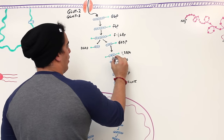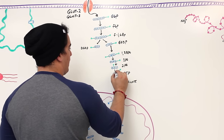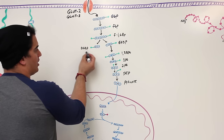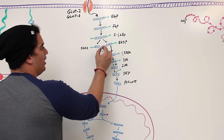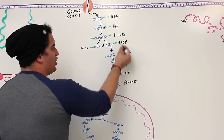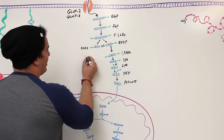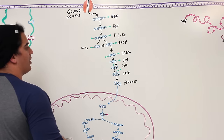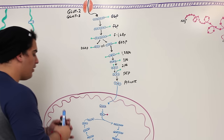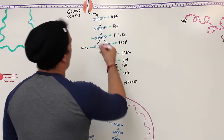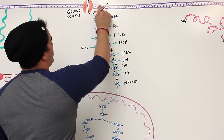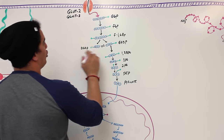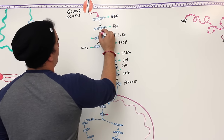The pathway goes GA3P → 1,3-BPG → 3-PG → 2-PG → phosphoenolpyruvate → pyruvate. This occurs once with GA3P, and DHAP gets converted into GA3P and goes through the same process, so the pathway effectively occurs twice. Some steps in this pathway are highlighted in pink as important irreversible control steps.